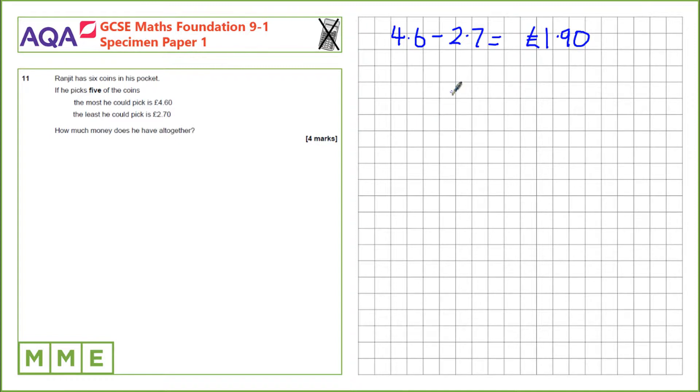If he's going to pick £4.60, he has to pick a £2 coin. Because if he didn't have a £2 coin, that would be four £1 coins and then £0.60 left over, which he can't achieve in a single coin.